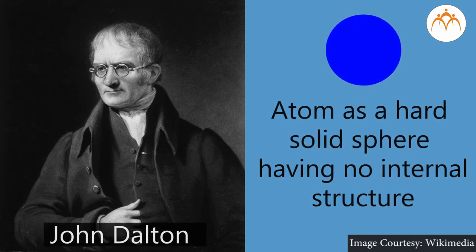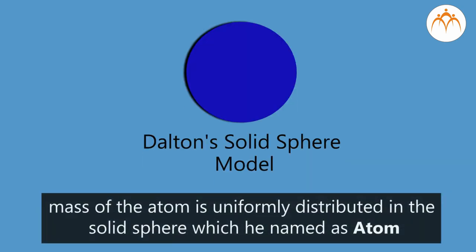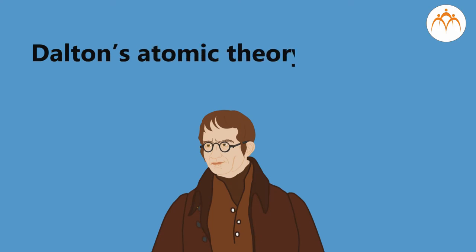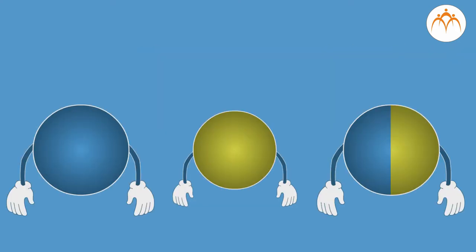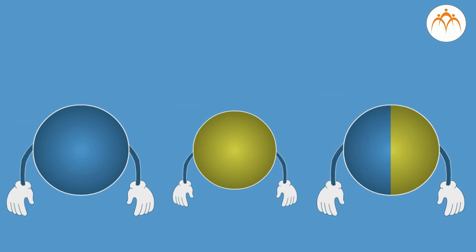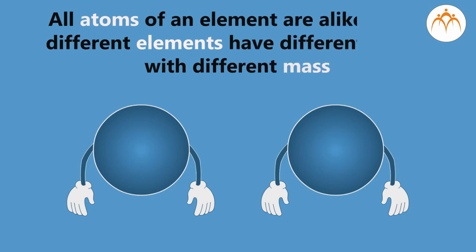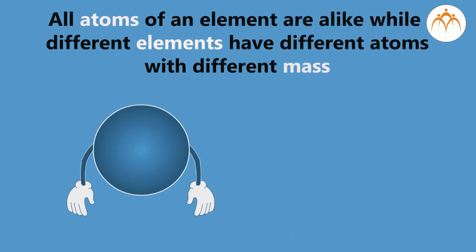According to Dalton, the mass of the atom is uniformly distributed in the solid sphere, which he named the atom. Dalton's atomic theory states that matter is made up of atoms which are indivisible and indestructible. All atoms of an element are alike, while different elements have different atoms with different masses.